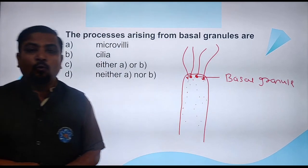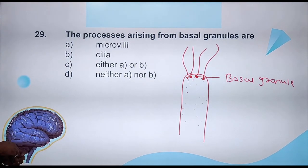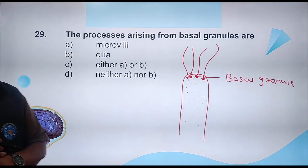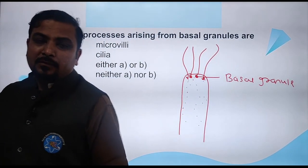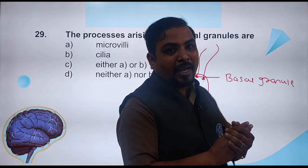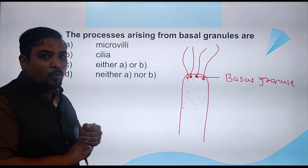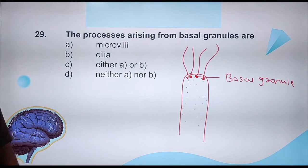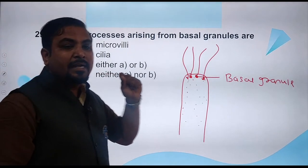Those centrioles are called basal granules. From there, finger-like projections come out. From the last question you answered that finger-like projections are cilia. So the processes arising from basal granules — are they microvilli or cilia? There is no fluctuation in answers now. The right answer for question 29 is option B — cilia.